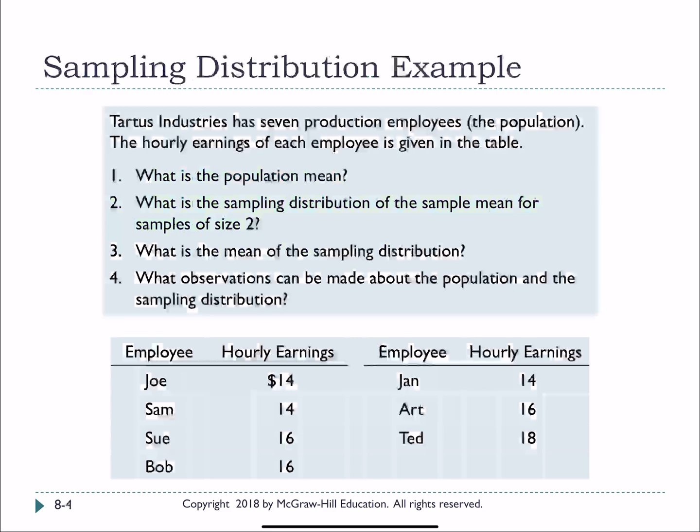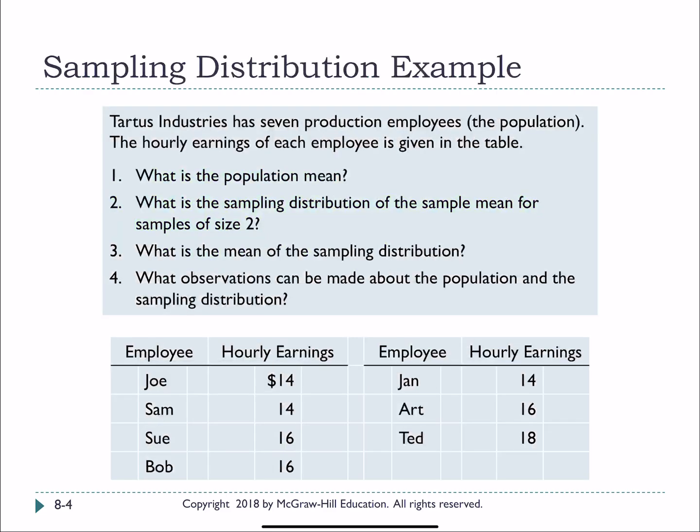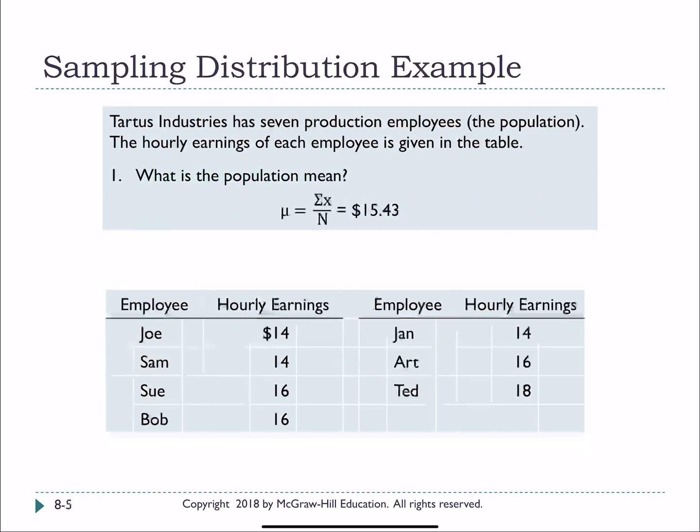So let's look at an example to work through this. We have this company, Tardis Industries, and they have seven production employees. So that's their total population is seven. Going with a small example so I can show you the steps to work through this. We're given the hourly earnings below in this table. The first question that we're asked is to find the population mean. We're going to sum up all of our x values, add up all of these, and then divide by the total number in the population, that's my n, and in this case it's seven. We would have 108 divided by seven, which is $15.43. So the average hourly earnings for their employees for the entire population is $15.43.